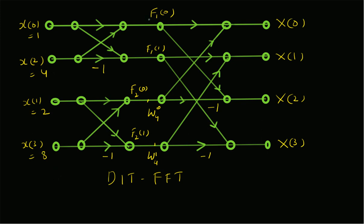The output of the first stage: f1(0) = x(0) + x(2) = 1 + 4 = 5; f1(1) = x(0) − x(2) = 1 − 4 = −3; f2(0) = x(1) + x(3) = 2 + 8 = 10; and f2(1) = x(1) − x(3) = 2 − 8 = −6. The input to the next stage includes the twiddle factor multiplication: W4^1 × f2(1) = −6 × W4^1, which equals 6j.